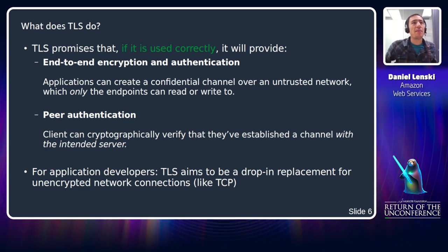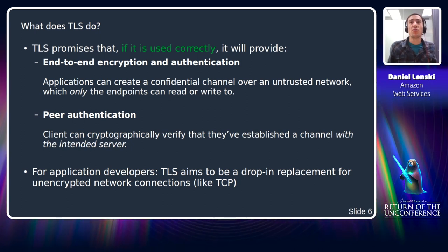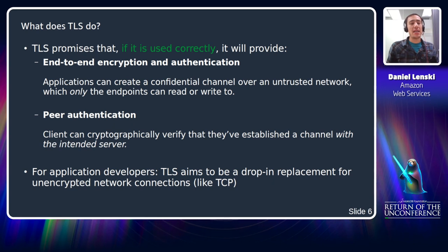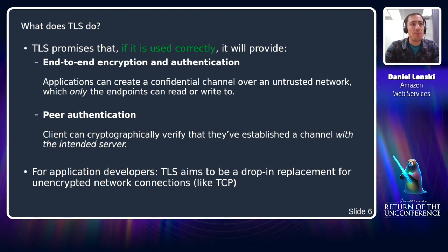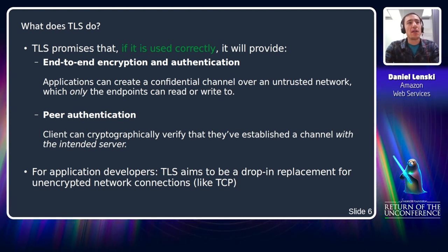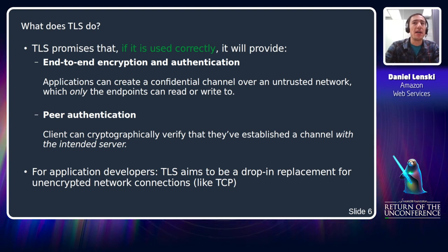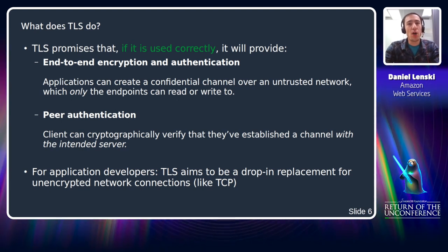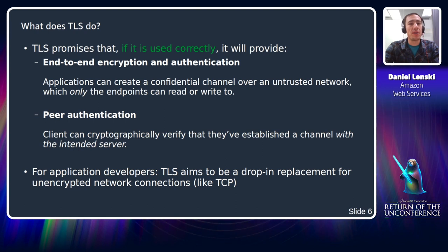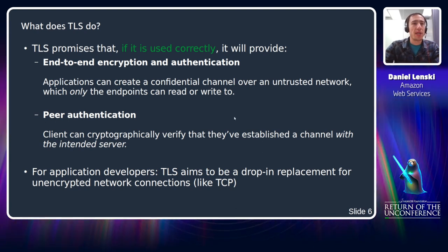TLS promises applications, developers, and users that if used correctly, it will provide end-to-end encryption and authentication. Applications can create a confidential channel over an untrusted network, and it provides peer authentication. Clients can use TLS to cryptographically verify that they've established that channel with the intended server. TLS also aims to be a drop-in replacement for unencrypted network connections like TCP and their programming interfaces.